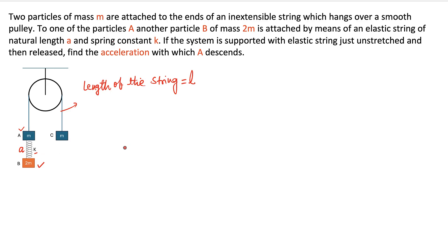The system is supported with the elastic string just unstressed — so initially the string is not stretched, the whole thing is kept in this position, and then released at time t = 0. We need to find the acceleration with which A descends. They could also ask about the acceleration of the other mass, the tension in the string, and how 2m undergoes SHM — but let's compute everything and answer the question.